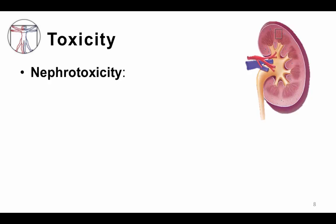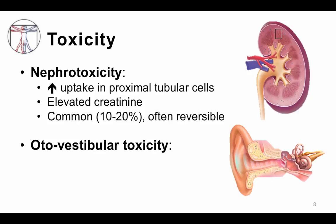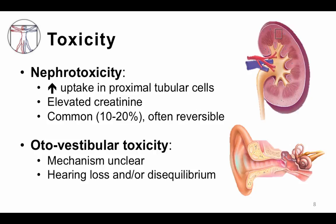One of the important points about aminoglycosides and why we don't use them anymore is their toxicity. First, nephrotoxicity: they can cause significant kidney damage through uptake in proximal tubular cells, leading to elevated creatinine levels and renal dysfunction in up to one in five patients. It is dose-dependent and often reversible, though not always. The other important toxicity is otovestibular toxicity, affecting both hearing and balance. Unfortunately, hearing loss and disequilibrium can be permanent and irreversible, which are serious reasons these drugs are used infrequently today.